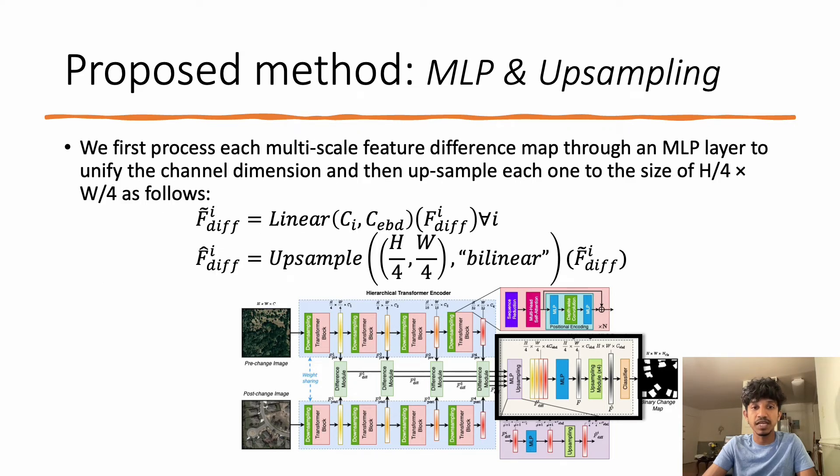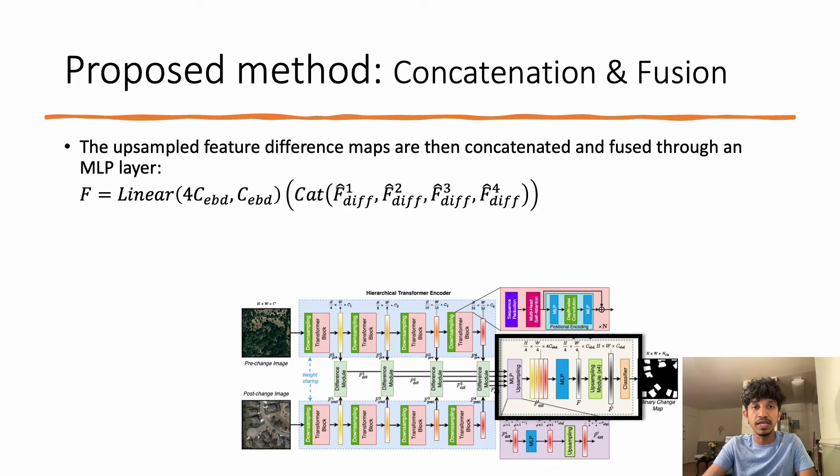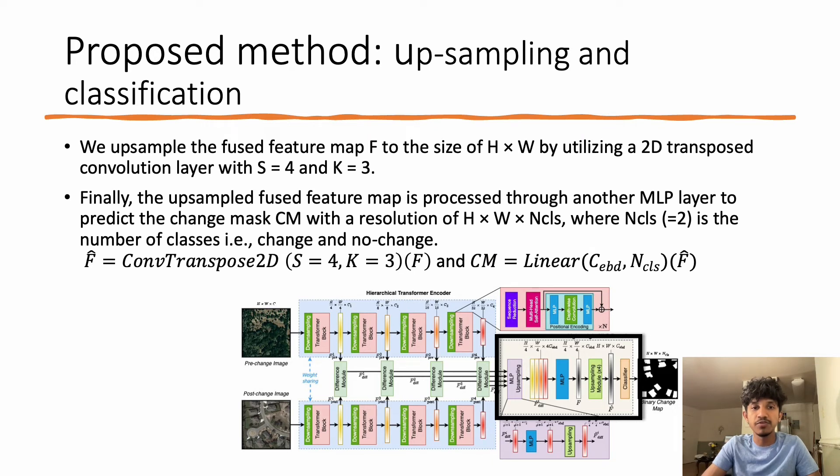We first process each multi-scale feature difference map through an MLP layer to unify the channel dimension and then upsample each one to the size of H/4 × W/4 as shown in the equation. The upsampled feature difference maps are then concatenated and fused through an MLP layer.